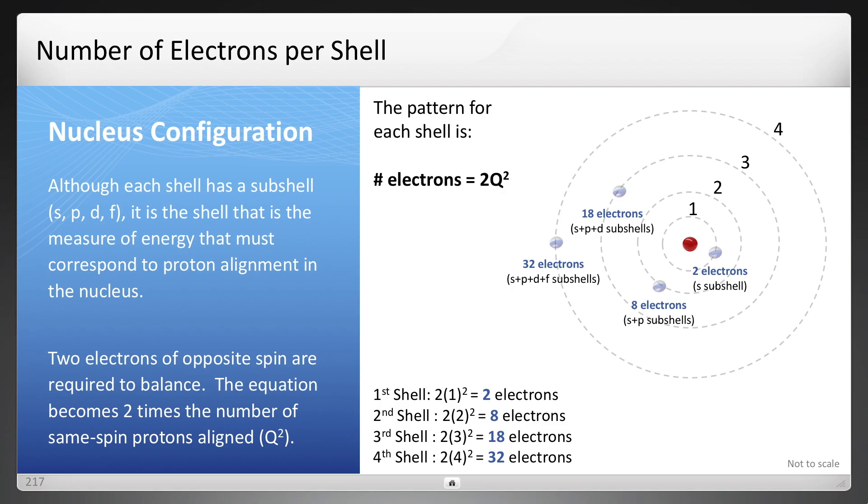And there's a pattern here, that number q, which is the number of same spin protons in alignment, because each shell is going to require a balance of electrons, which has to have of opposite spin. If you take that number q of the protons, the same spin protons in alignment, and you square that according to the orbital force equation times 2, you get the numbers 2, 8, 18, and 32.